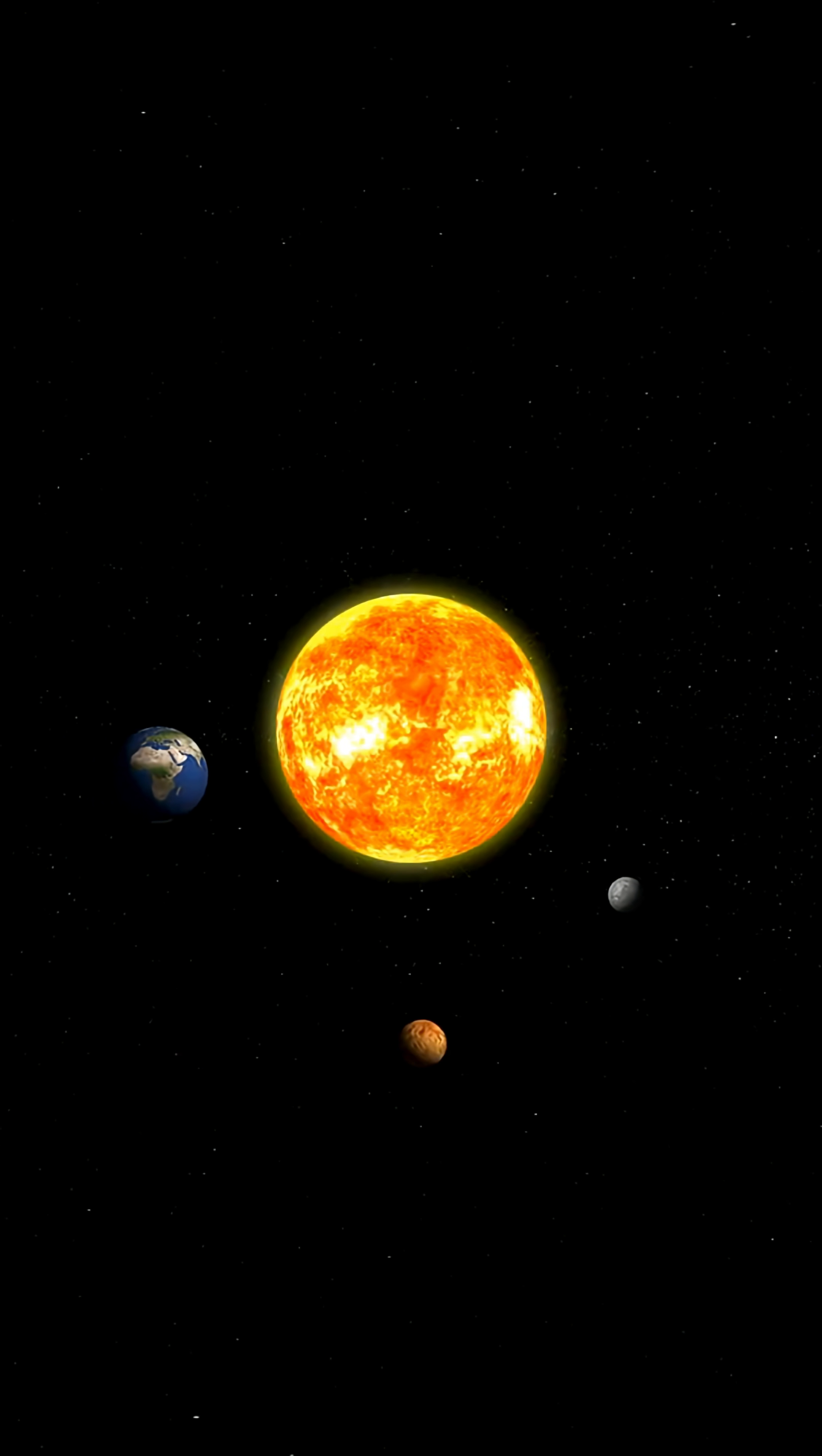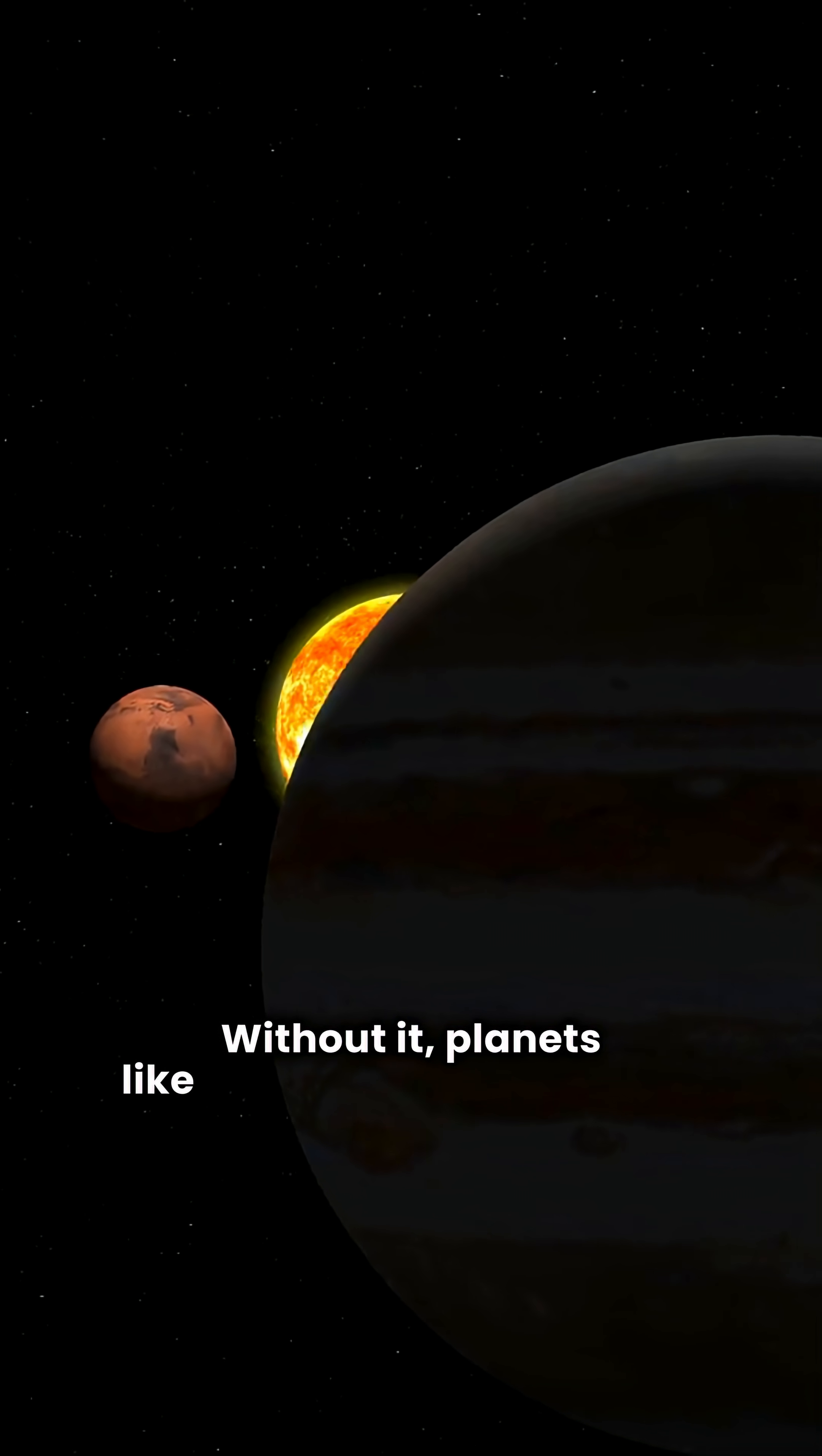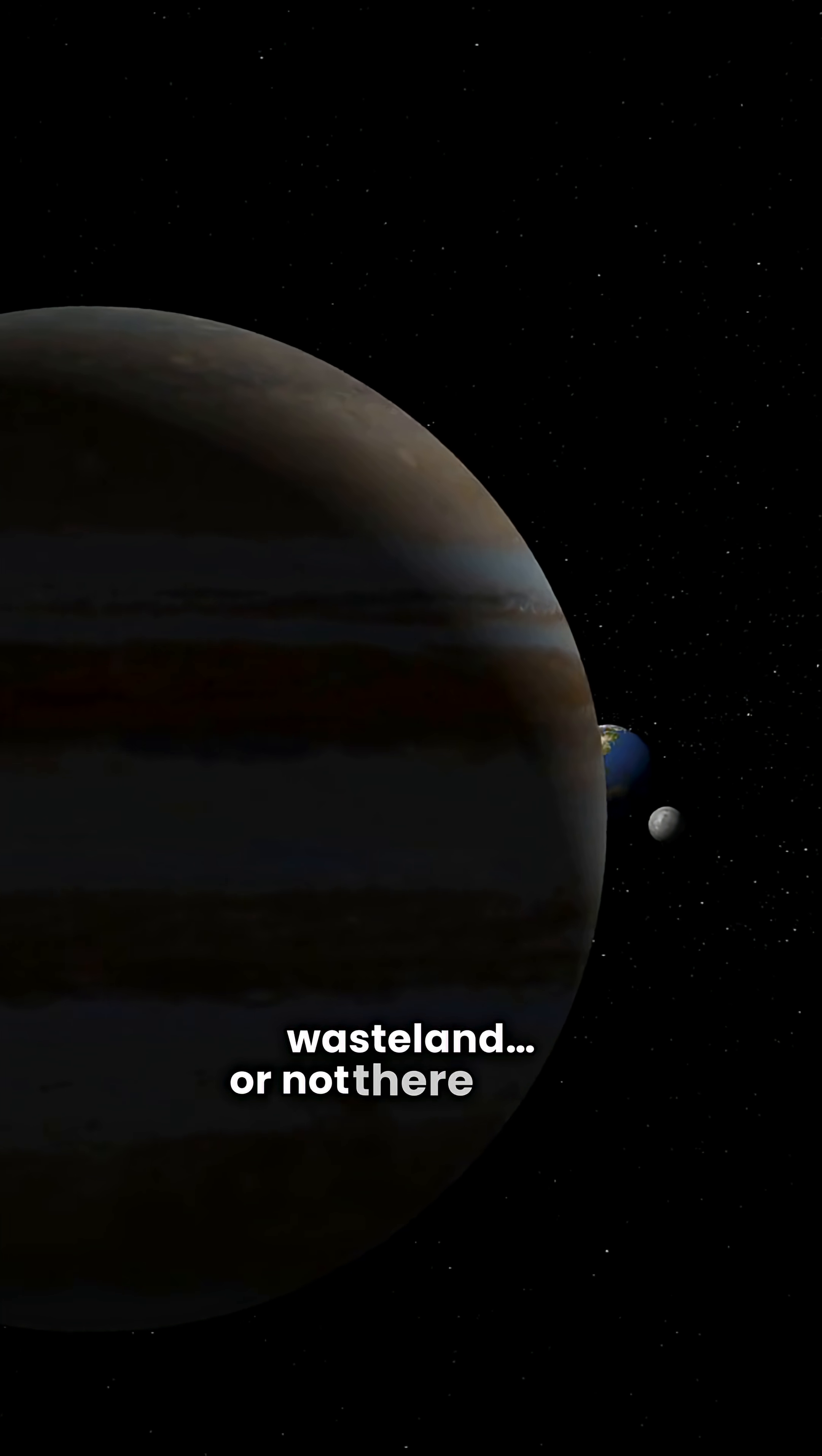And here's something crazier. Jupiter's mass and gravity helped shape our solar system in the first place. Without it, planets like Mars and even Earth might never have formed the way they did. Our world could have been a barren wasteland, or not there at all.